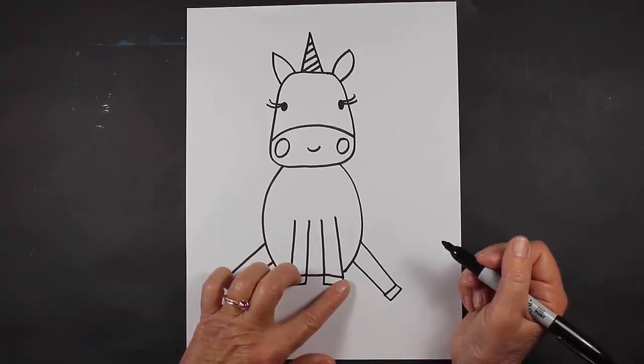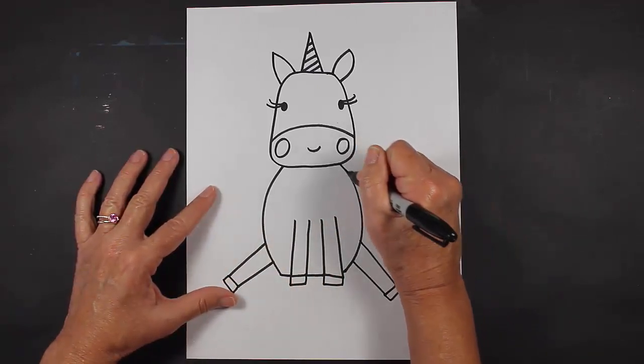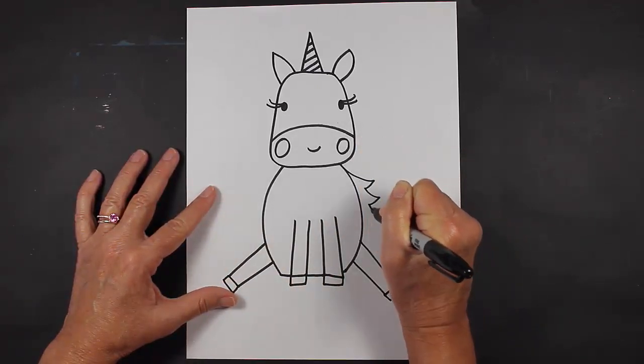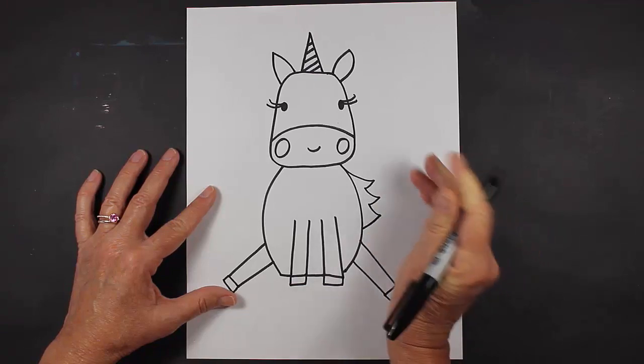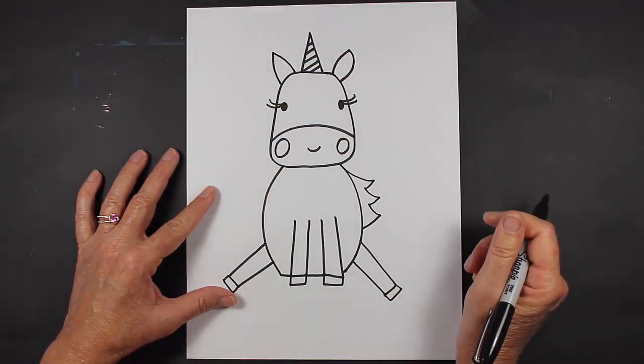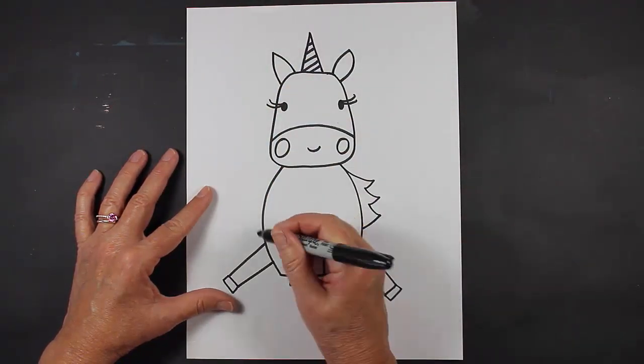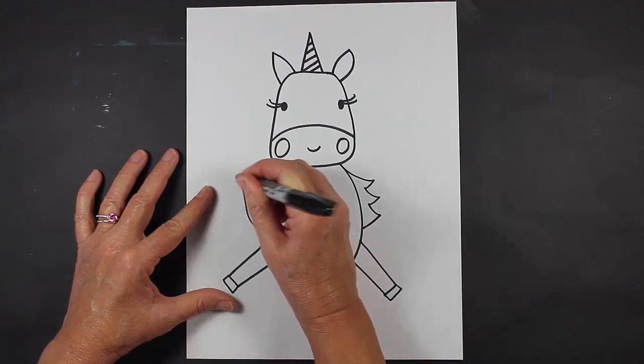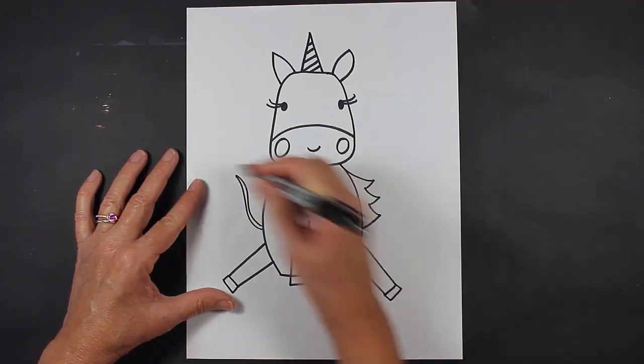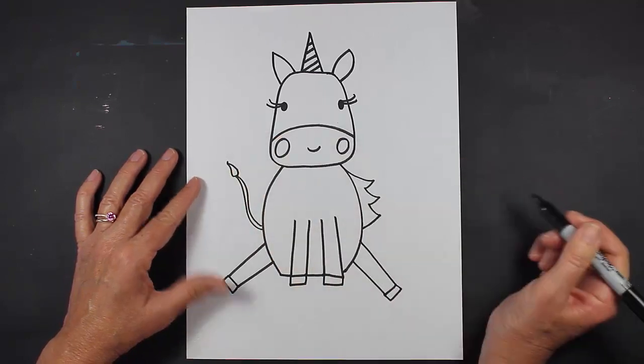All right, let's make a little bit of a mane coming out the side. We can't see the whole mane because it's on the back of our unicorn. And then a little tail coming out from the back. If you'd like to make a different type of tail, go ahead and do that.